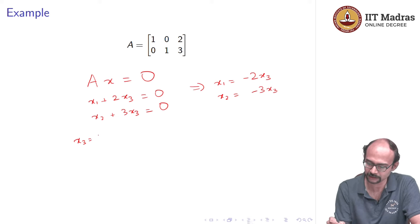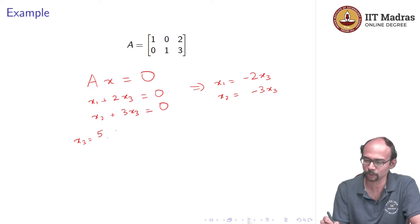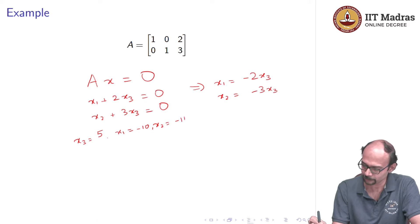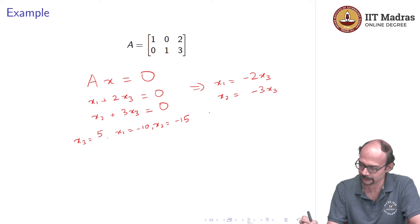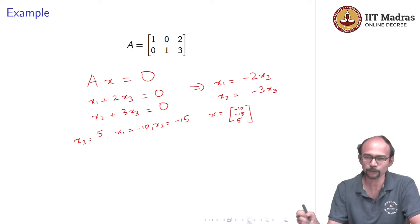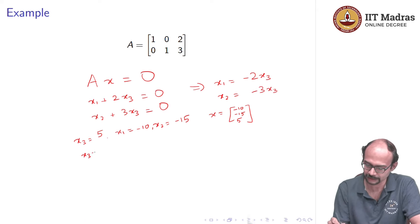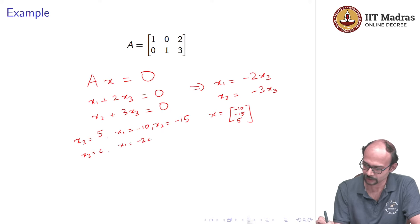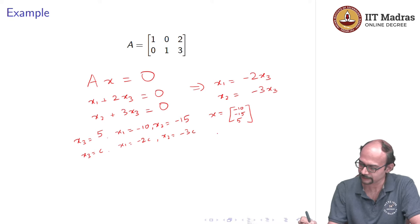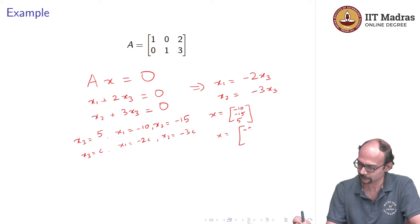We can put x3 equal to some constant C. For example, if x3 = 5, then x1 = −10 and x2 = −15, giving one solution x = (−10, −15, 5). In general, if x3 = C, then x1 = −2C and x2 = −3C, so the set of solutions is (−2C, −3C, C) where C can be any real number.